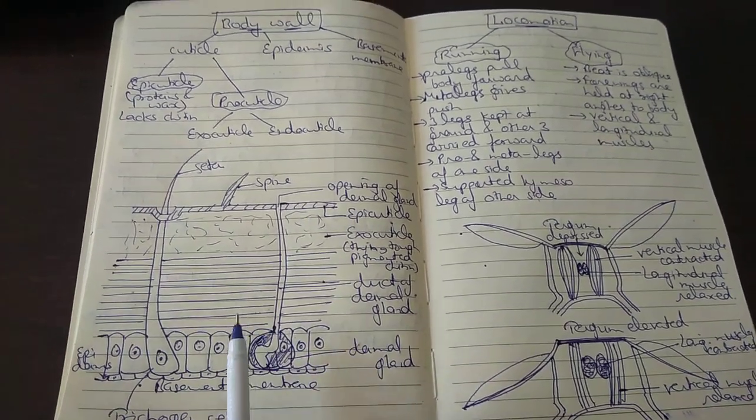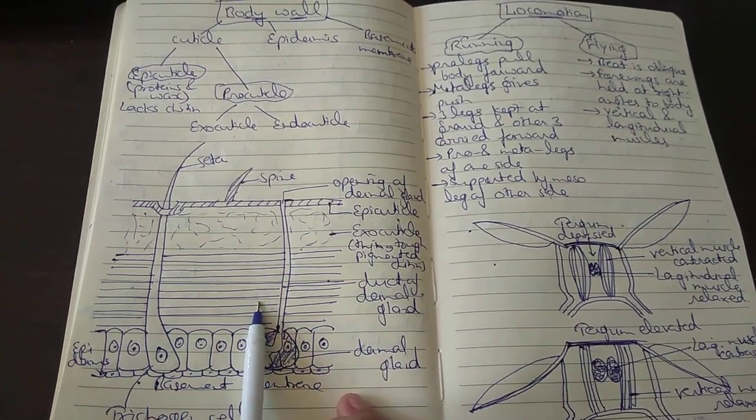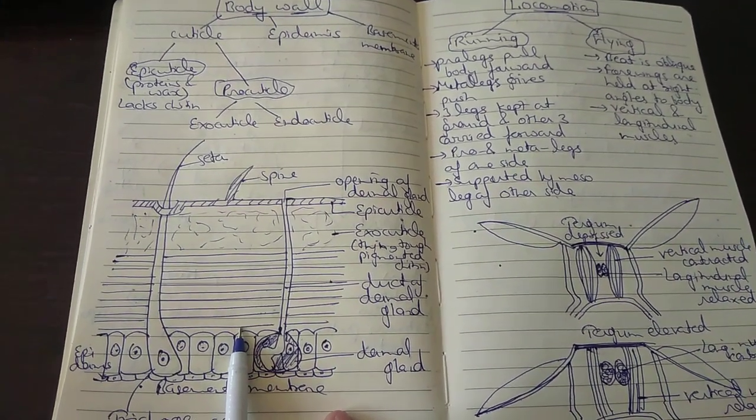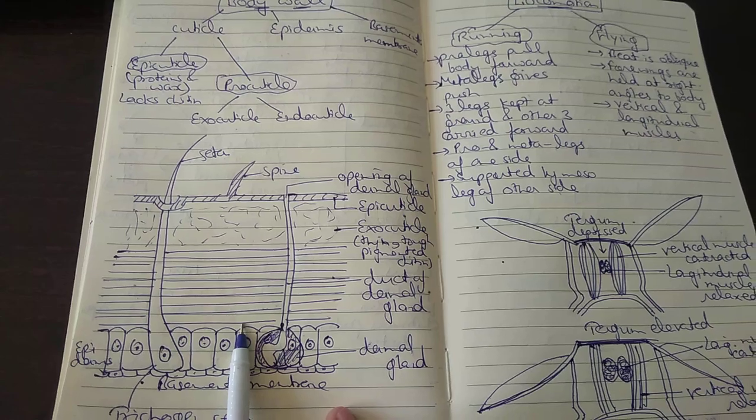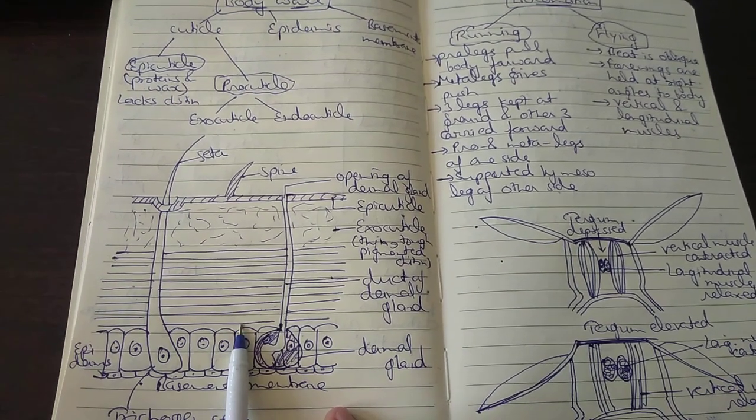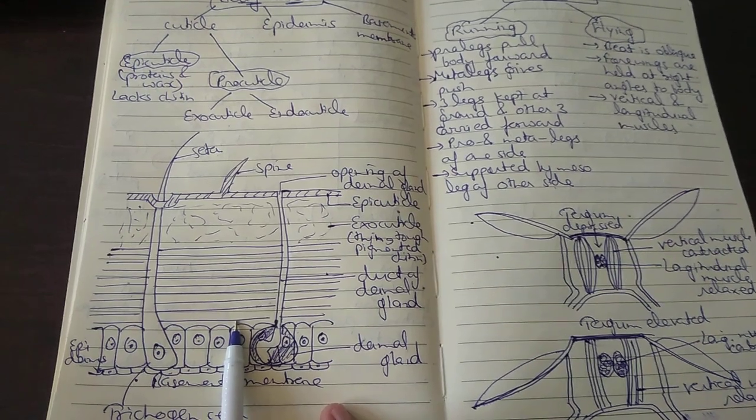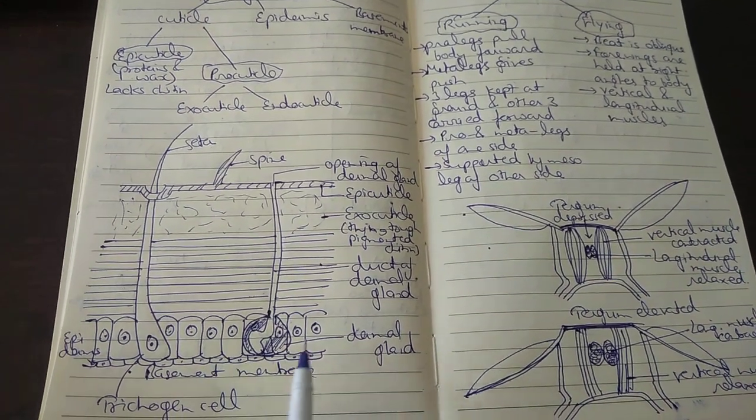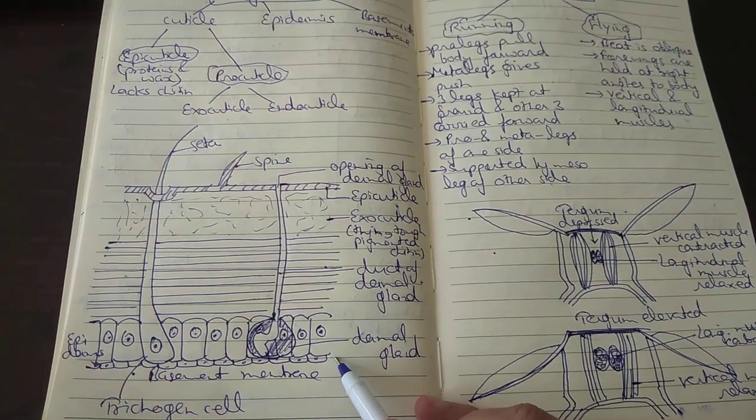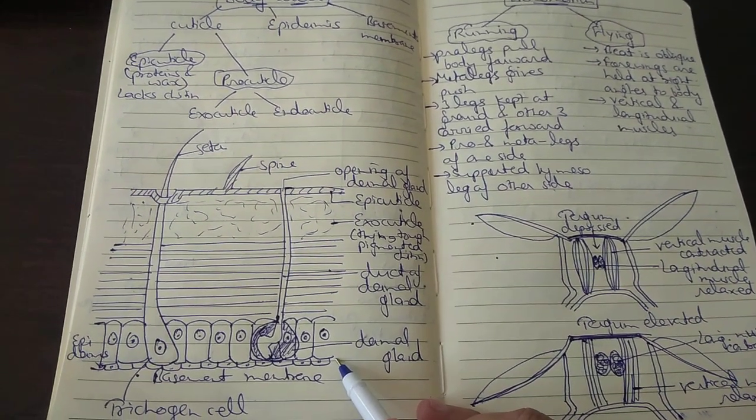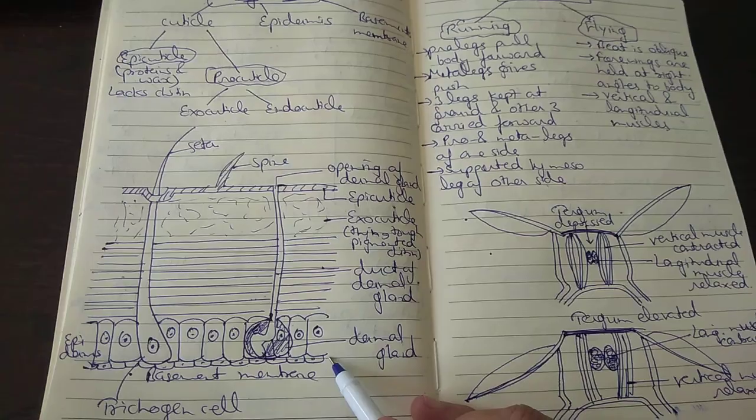The various functions of the body wall are to provide proper shape to the body and protect the inner visceral parts. Its waxy coating checks both absorption and loss of water, making the body unwettable. It provides a hard surface for the attachment of body muscles and helps in respiration by allowing diffusion of carbon dioxide.